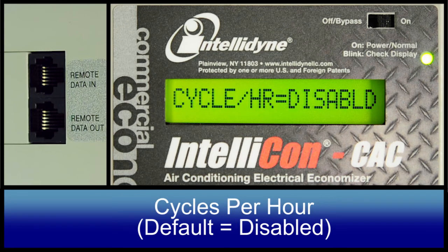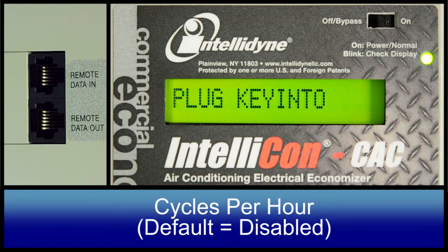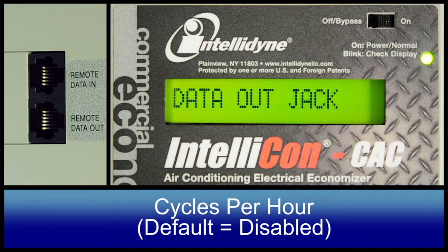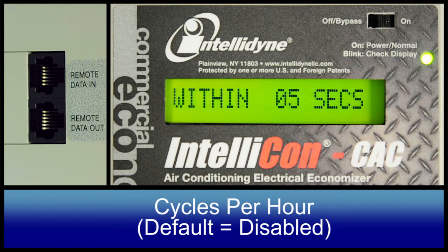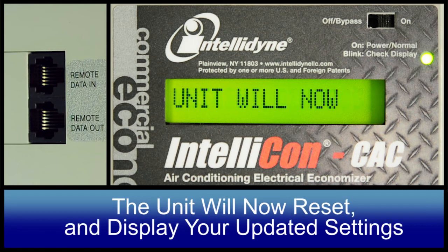Cycles per hour. This parameter causes the controller to force the compressor off after the desired continuous runtime for that cycle has been satisfied. The default value is disabled.